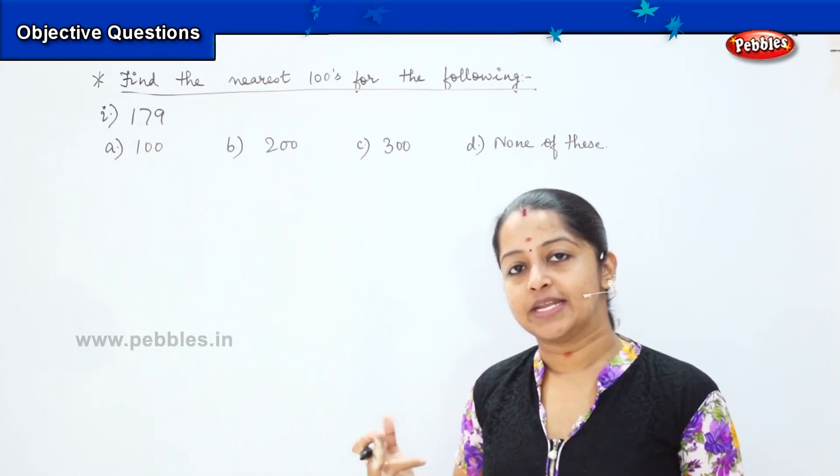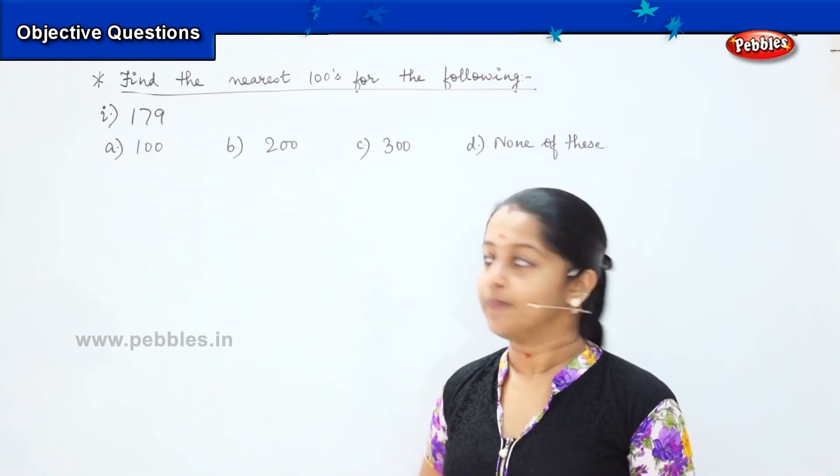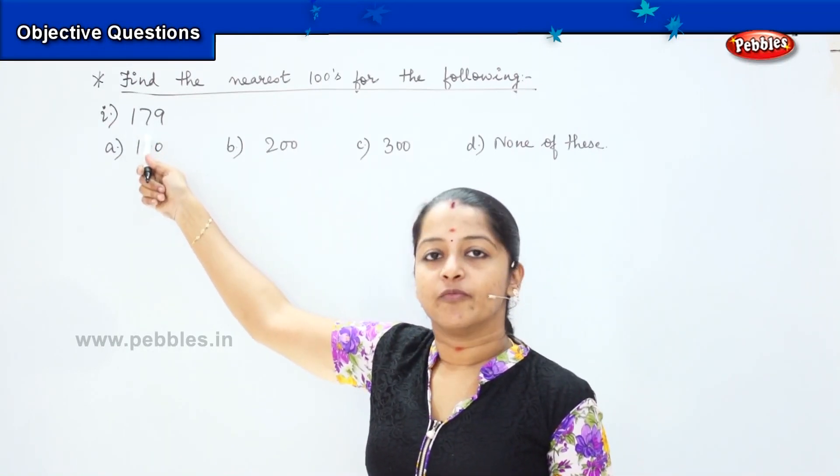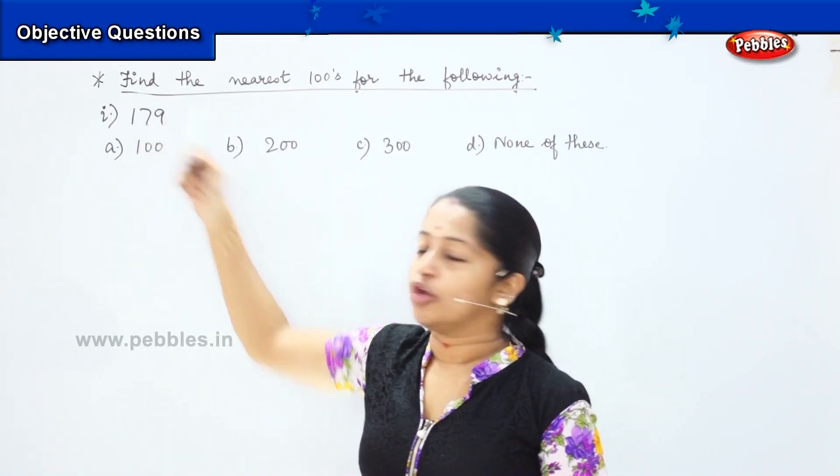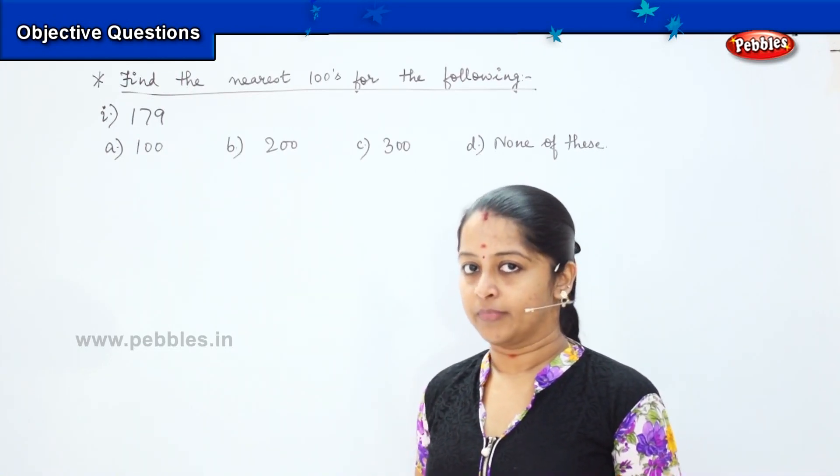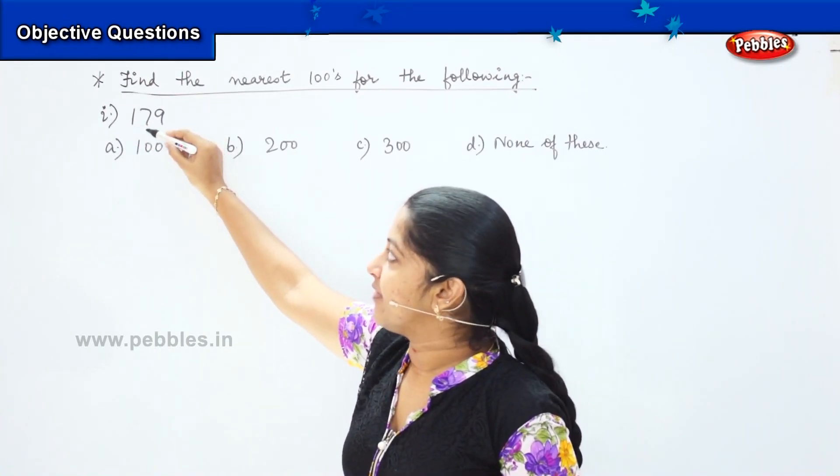When we were rounding off the tens, we were checking the value of ones and we were rounding it off, right? Now, when we are rounding the hundreds, we are going to see what value is the very next number. What is the value of the tens? Is it greater than 5 or less than 5? Here it is 179, the number 7.